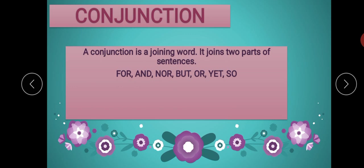A conjunction joins two sentences, and it also joins two words. It's not necessary that it only joins sentences — it can also join two words, and we will see that in the examples.